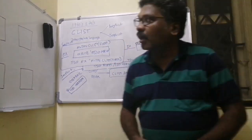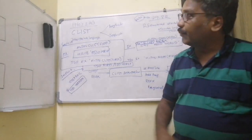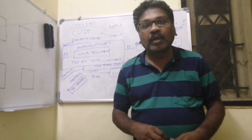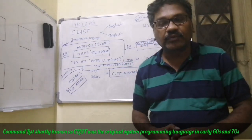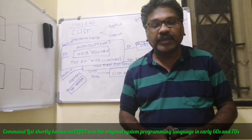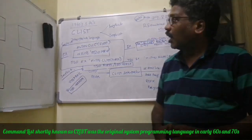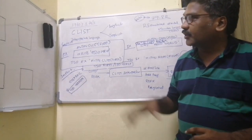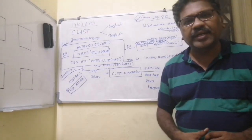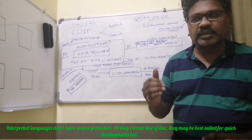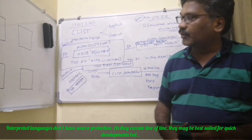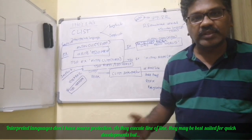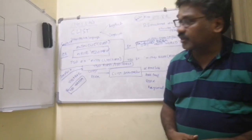As an intro: in the 1960s and 70s, CLIST was the only system programming language on mainstream mainframe platforms. CLIST stands for Command List. It is basically an interpreted language, meaning it executes line after line. It can be executed in two ways: explicit way or implicit way.